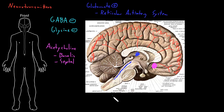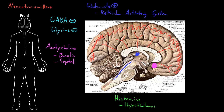The next one is histamine. There are a number of neurons in the hypothalamus that send projections to release histamine all over the cerebral cortex. The hypothalamus is the source, and these neurons send these diffuse projections up to the cerebral cortex to release histamine.